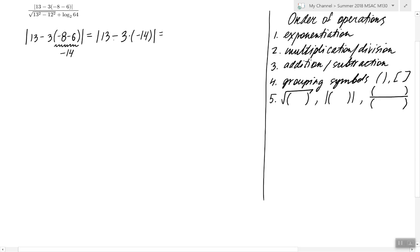Now inside the absolute value, we don't have exponents, so we have to focus on multiplication or division. No division, so we perform this multiplication. What's 3 times -14? It's -42.